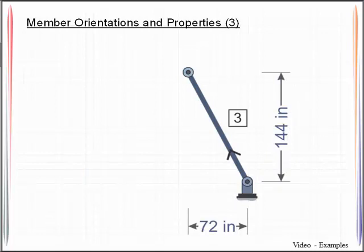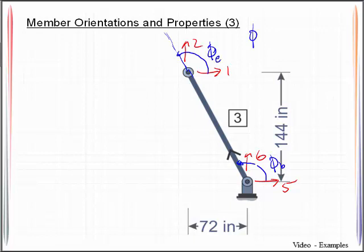So the final member that we are going to have to deal with has degrees of freedom 5, 6, 1, and 2. Remember what we would do, we would find the angle from the degree of freedom all the way to the member, so that is phi of beginning. I'll project that member out and I rotate from here to here, phi of ending, and in this case should be no surprise, those are the same because we haven't done anything weird with our degrees of freedom.